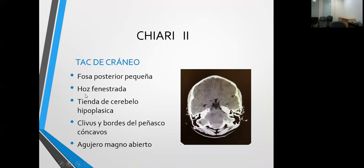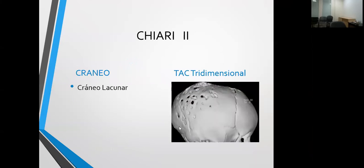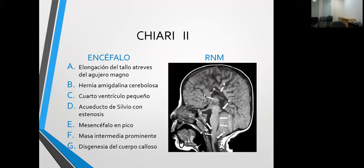También hay otras alteraciones: la duramadre cerebral se dice que es muy delgada o fenestrada. Puede haber un cráneo lacunar —áreas de adelgazamiento del hueso del cráneo—. En un gran porcentaje, hasta un 40% lo tienen, aunque en otros niños puede tomarse como una variante anatómica. Cuando es un cráneo lacunar específico, se verá en tomografía tridimensional o radiografía simple. Esta imagen es la que me interesa principalmente, porque será la fisiopatología de la que se derivará toda la clínica y las decisiones para un paciente con Chiari 2.